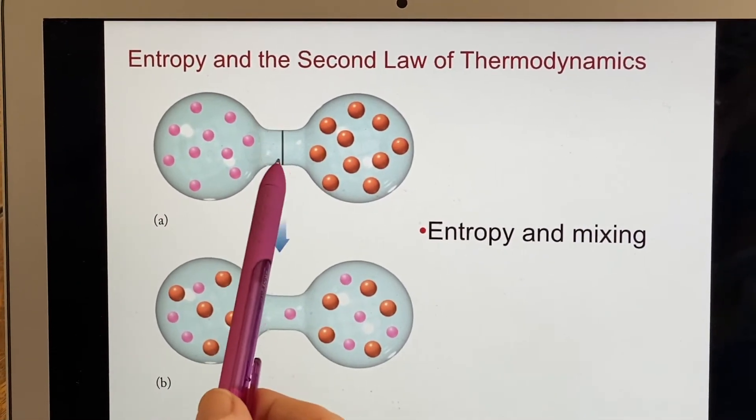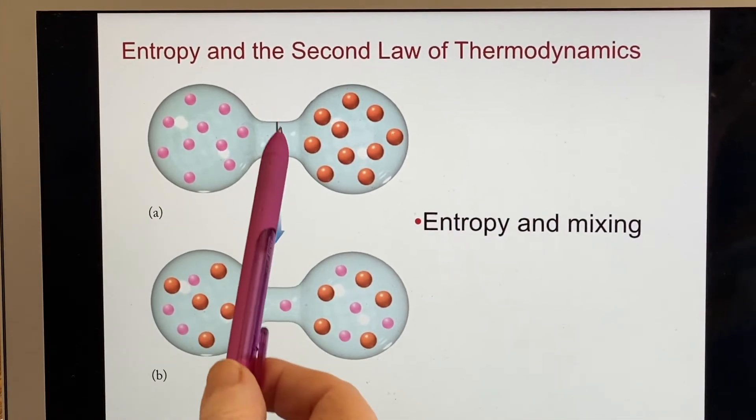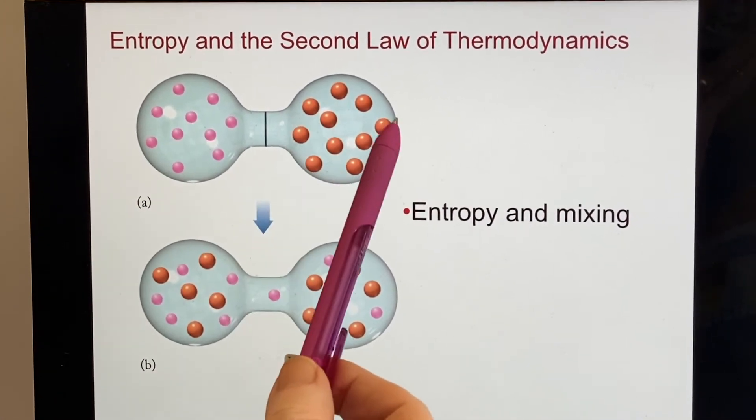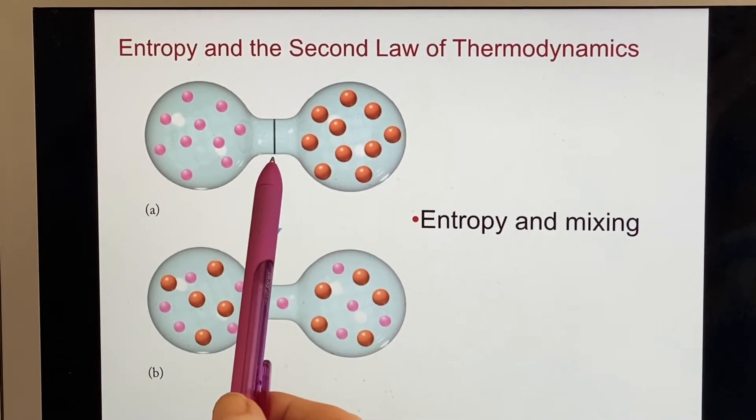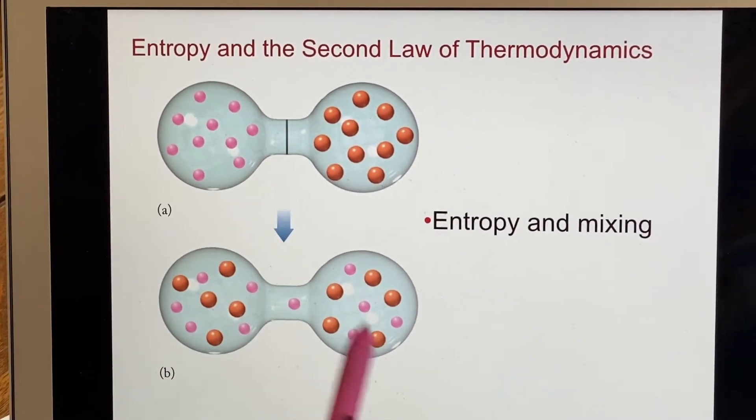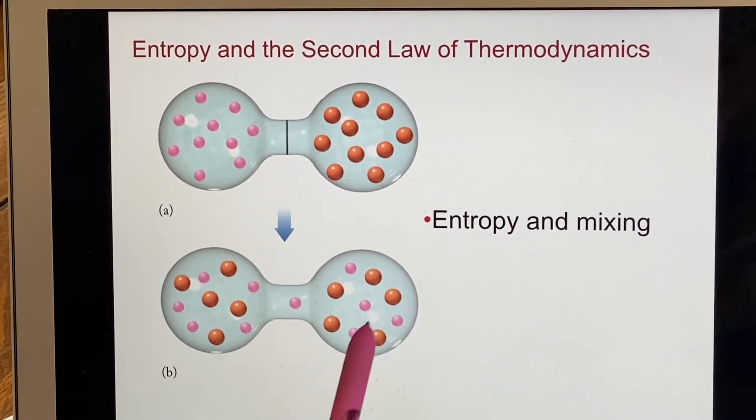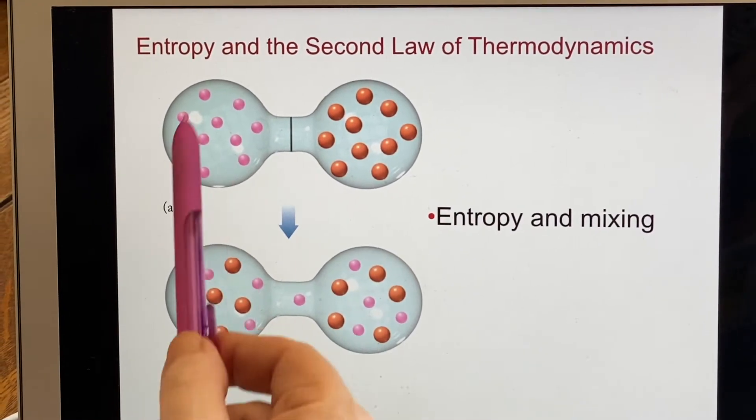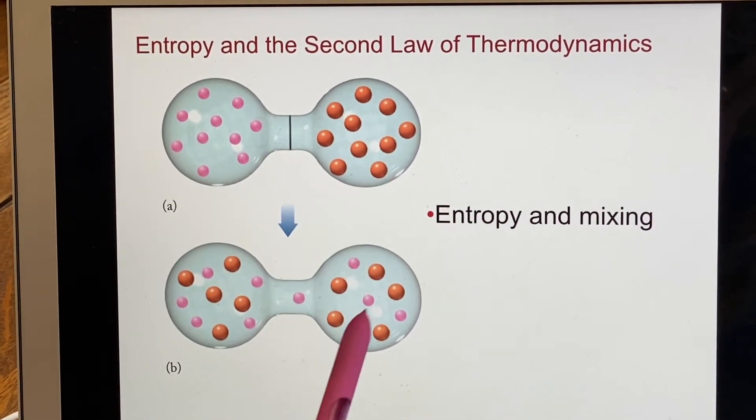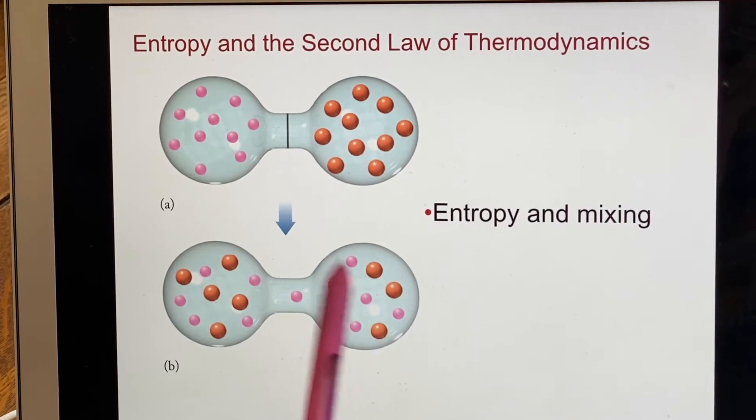Here we have an example. This is a very strange piece of glassware, but what it has in there is a barrier so that one side is one gas and the other side is a different gas. As soon as you remove the barrier, these will mix. Their entropy will take over. They don't stay separated anymore. They will spontaneously mix.